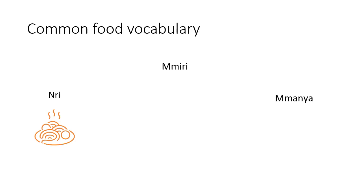Again: ngri — food. Miri — water. Manya — drink. So manya means drink from water. Ngri is soft drink or alcohol, so long as it's not a hot beverage. Hot beverages are different. Drinks like juice and other things fall under manya.